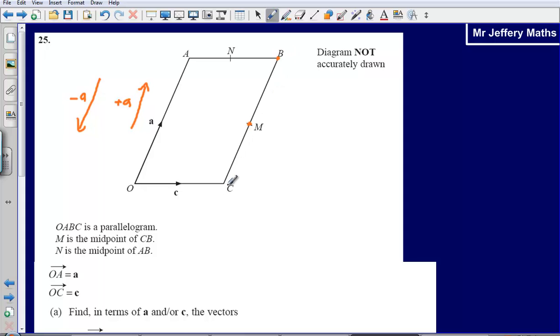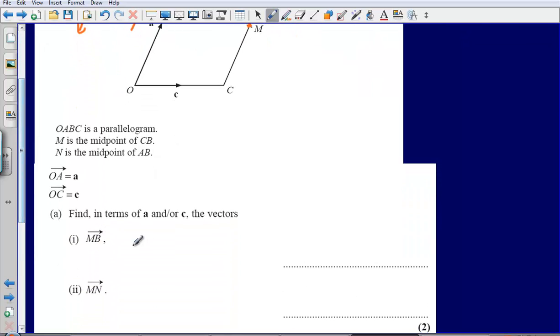Now what I can see here is because these lines are parallel, I can say that M to B is going to be in the direction of A. But we are told here that M is the midpoint of CB, so I am actually only going half of the distance. So what I could say is that from M to B this is simply positive half of A. So A would be the entire distance from C to B, we are only going from M to B, so we can say that it is positive half A. So MB I can just call half A.